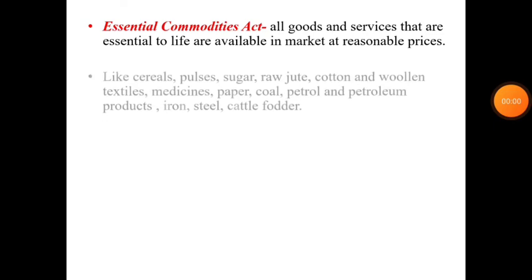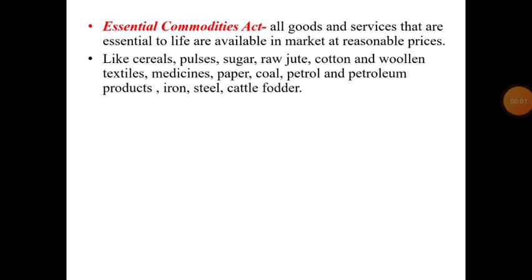The government list of essential commodities includes items like cereals, pulses, sugar, raw jute, cotton, woolen textiles, medicines, paper, coal, petrol and petroleum products, iron, steel, cattle fodder, etc.